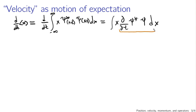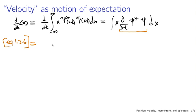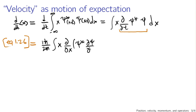If you remember this expression — the partial time derivative of psi star psi — that was what we worked with in the lecture on normalization, equation 1.26 in the book. Applying that result, you can simplify this down a lot right away. What you end up with is i h-bar over 2m times the integral of x times the partial derivative with respect to x of [psi star (∂psi/∂x) minus (∂psi star/∂x) times psi], integrated dx.